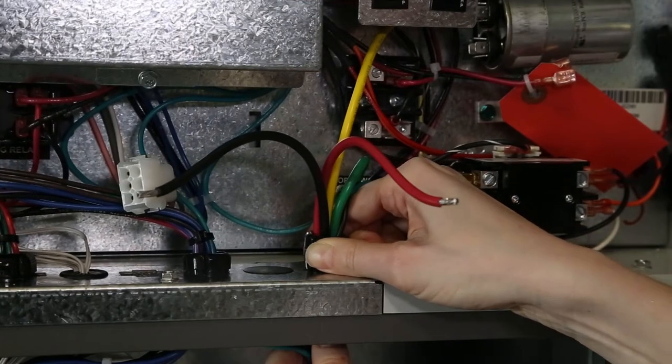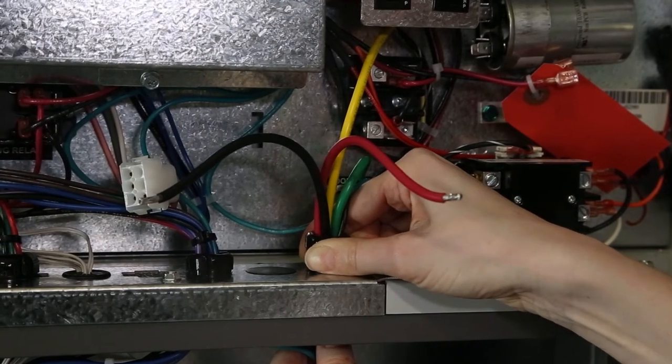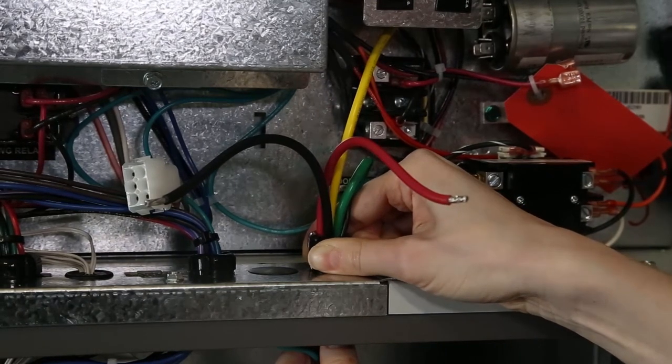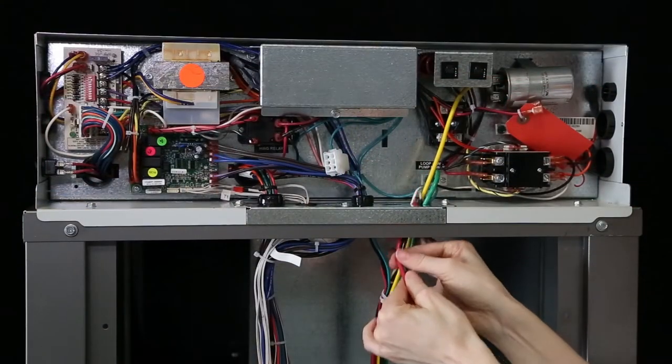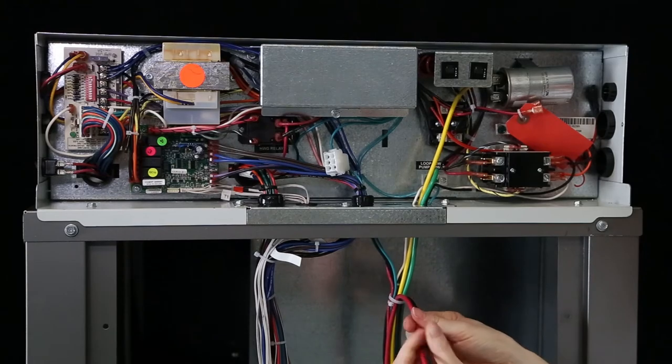At this point the strain relief that snugly holds all the high voltage compressor wires is removed from the control wiring plate that is mounted on the top cover of the unit so that the red and black wires can be separated from the bundle and routed down to the compressor section.